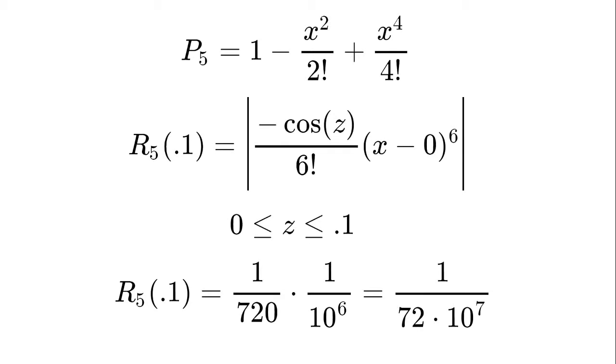And then all of that is multiplied times (x-0) to the sixth power, since zero is the center, and z is going to be in between zero and 0.1, as you can see right underneath that. So when you plug that in, we are going to plug in zero for -cos(z) since that will result in the largest error.